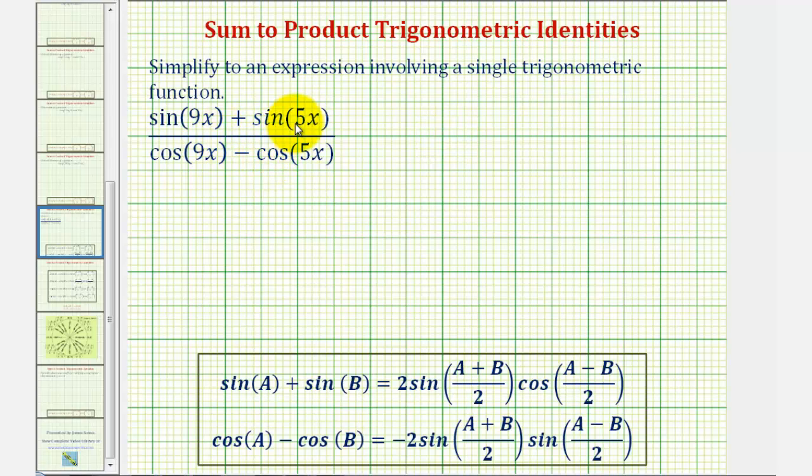We want to simplify the given expression to an expression involving a single trigonometric function. To do this, we're going to use the sum to product identities given here below.